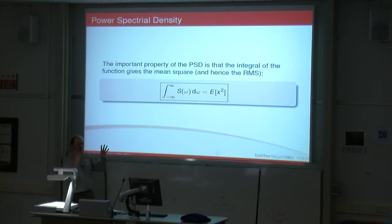You take the integral of the output power spectral density, that gives you the mean square. You take the root of that, you get your XRMS, which is what we're looking for.